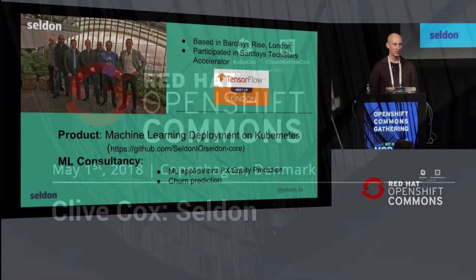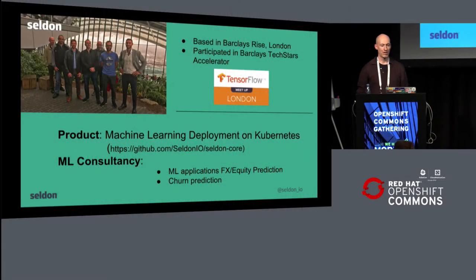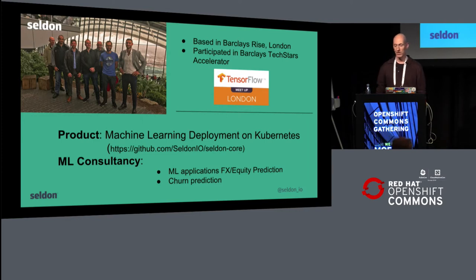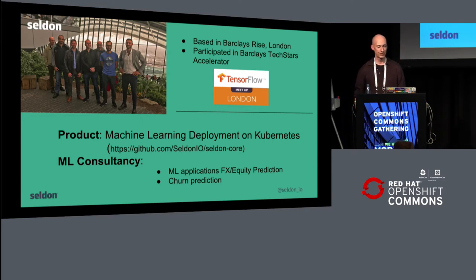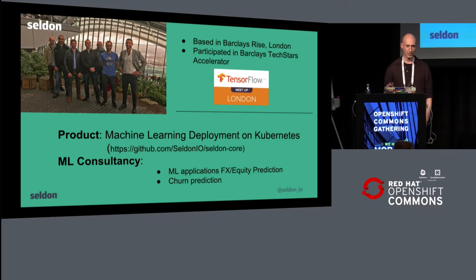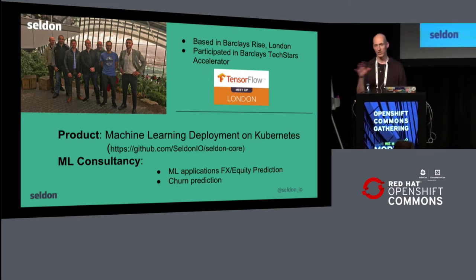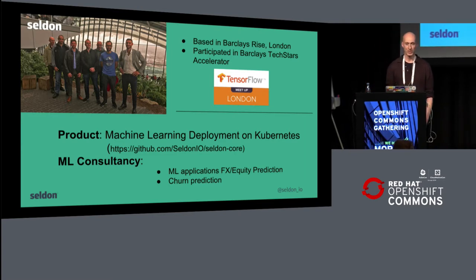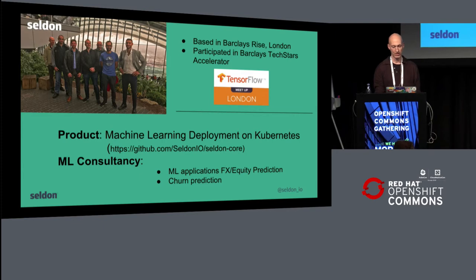I work at Seldon. We're based in Barclays Tech Hub in London. It's an accelerator with 20 to 30 companies in it. We run the TensorFlow London workshop every month, so if you're in London, it'd be great to have you there. As a company, we work on machine learning deployment in Kubernetes, and we also do consulting in the FinTech area, doing machine learning in various effects, equity prediction, and various other things.